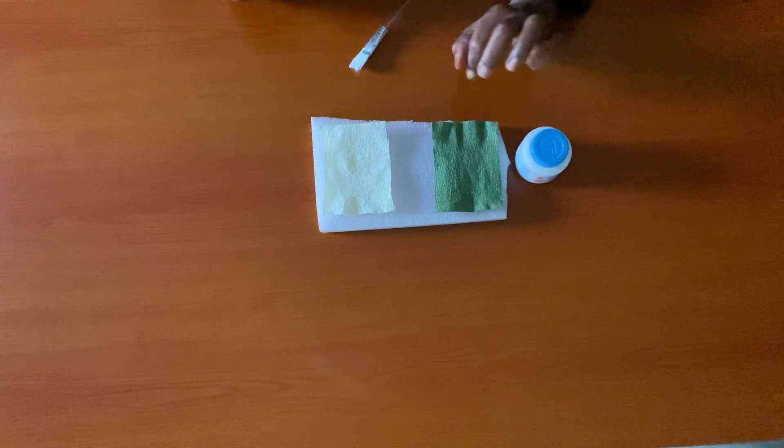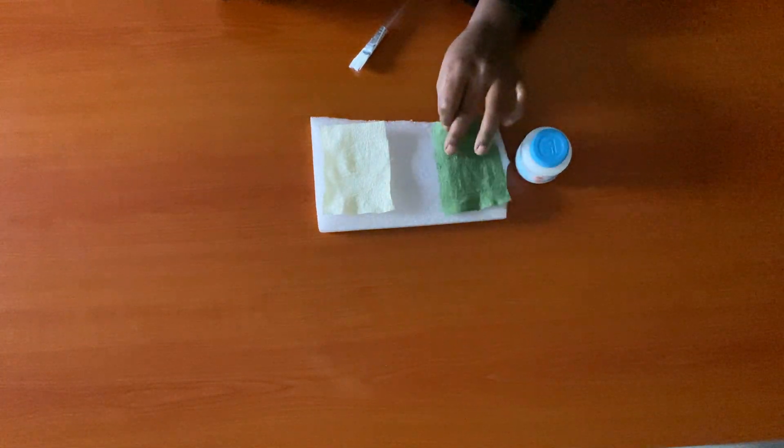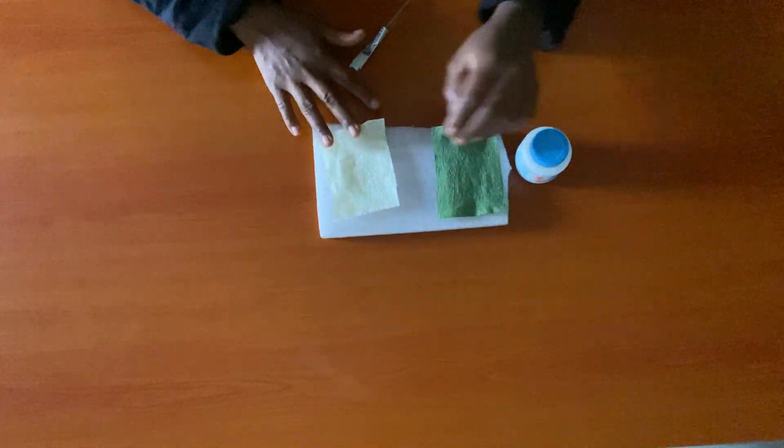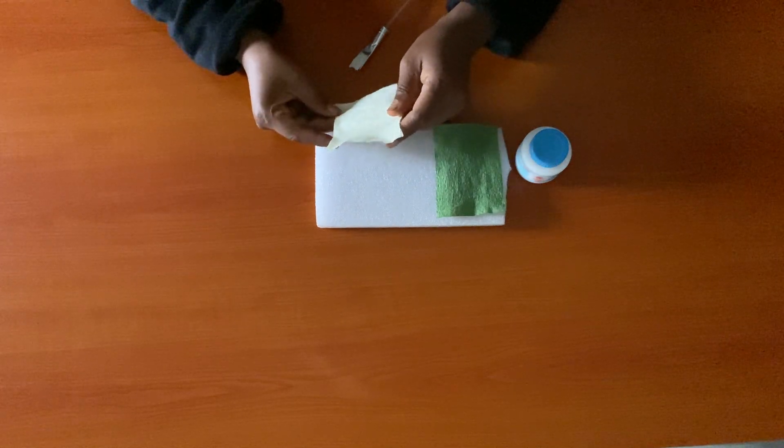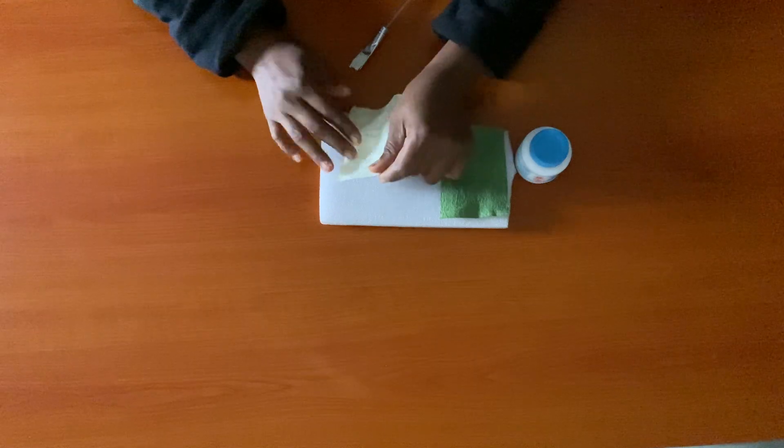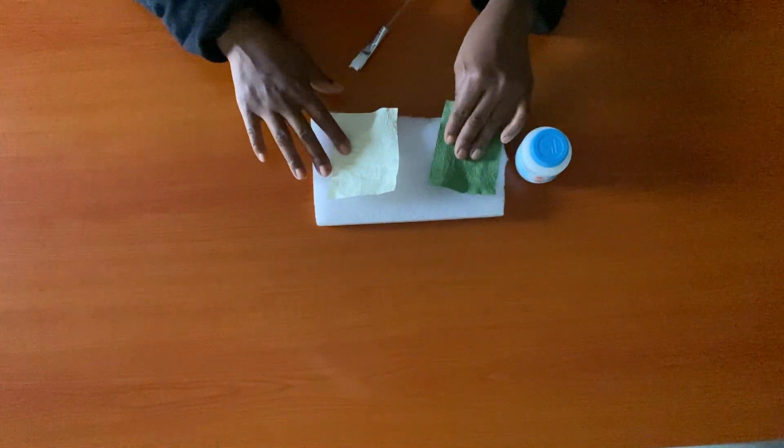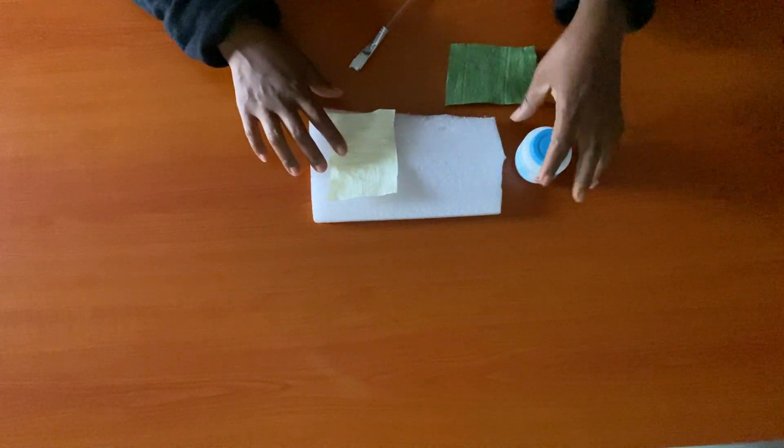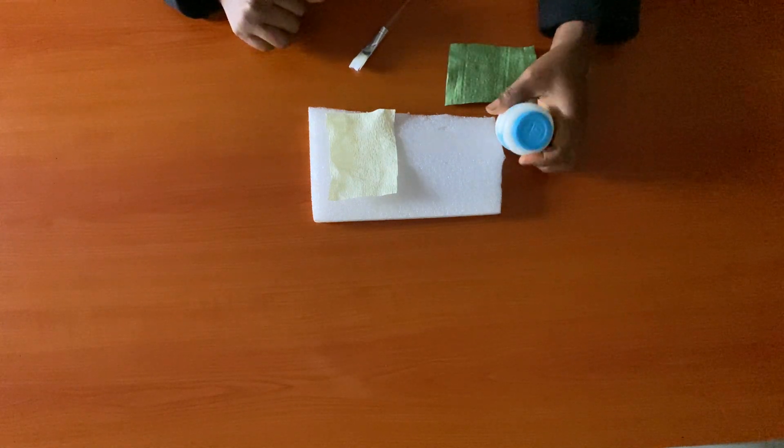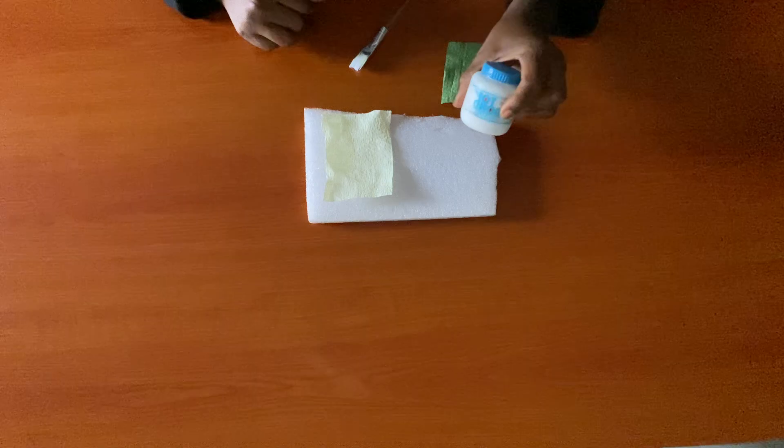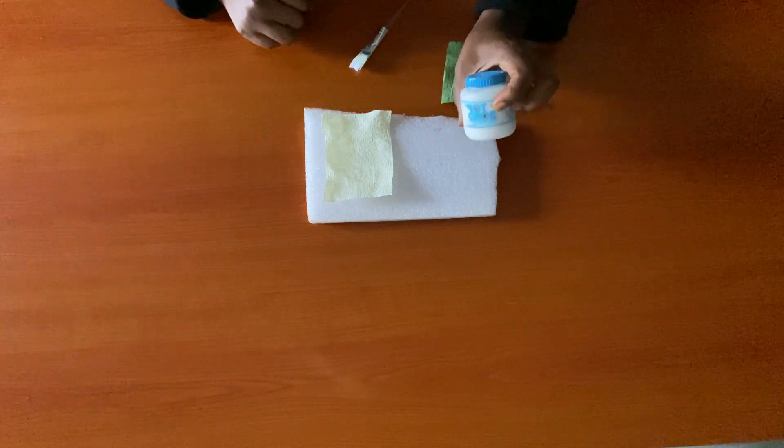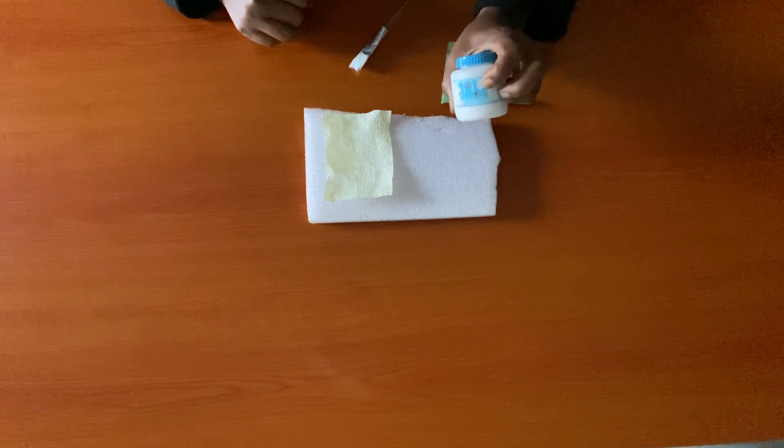Let's get started with our crepe paper. We are looking at the back side. We're going to glue the back side and laminate. I'm using a glue called Top Bond. Nigerians will know this glue. It's called Top Bond, the one popular here for artists.